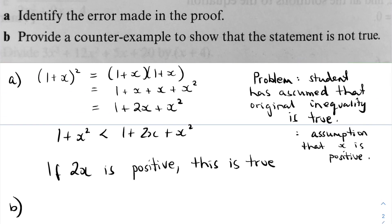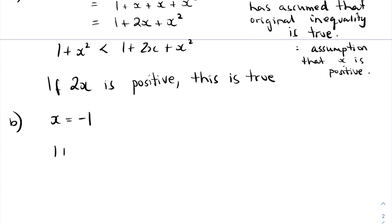I'll go for a very simple x equals minus 1. 1 plus minus 1 squared equals 2. And 1 plus 2 lots of minus 1 plus minus 1 squared is 0. It's certainly not true that 2 is less than 0. So we've found a counterexample, and any negative x value will work there. That completes the question.